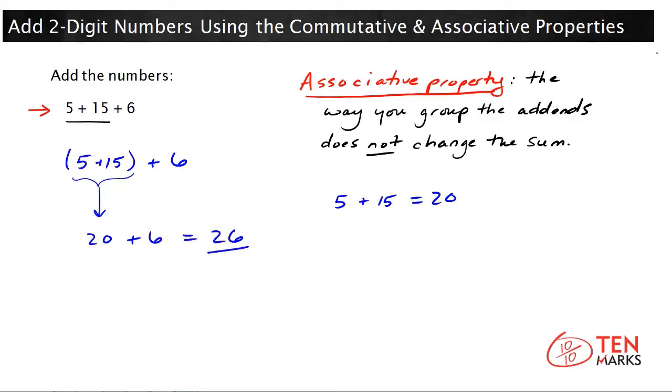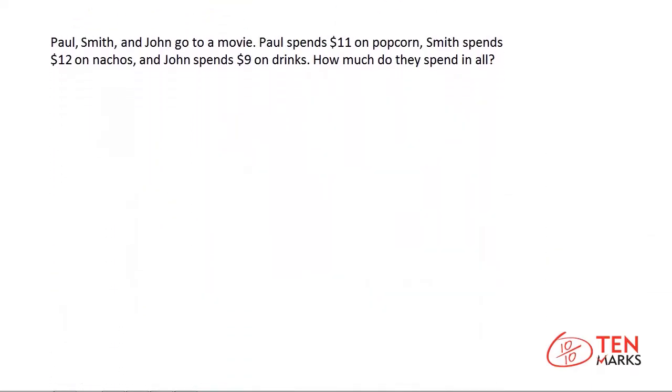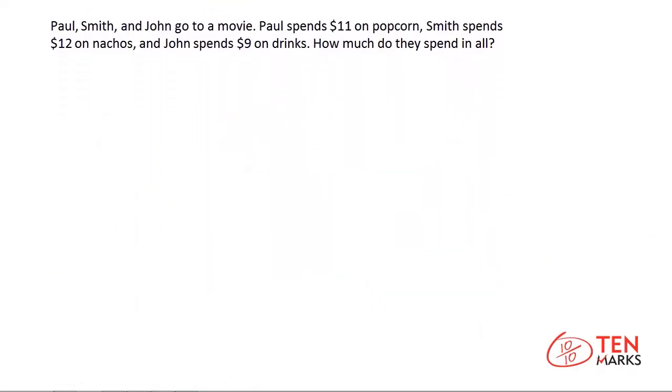Let's try another problem together. Paul, Smith, and John go to a movie. Paul spends $11 on popcorn for everyone. Smith spends $12 on nachos. And John spends $9 on drinks. How much do they spend in all? So let's write the numbers.